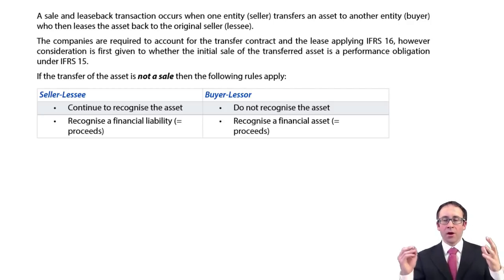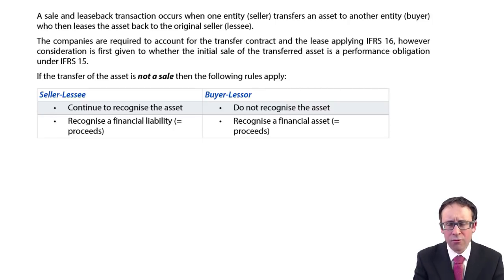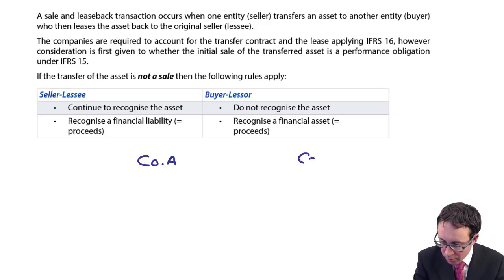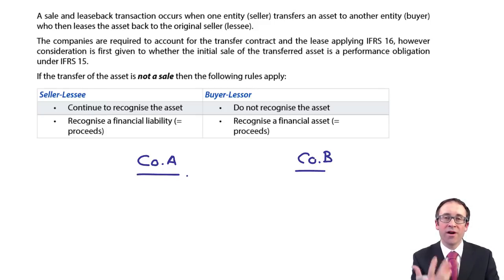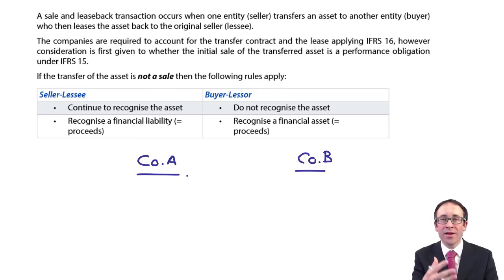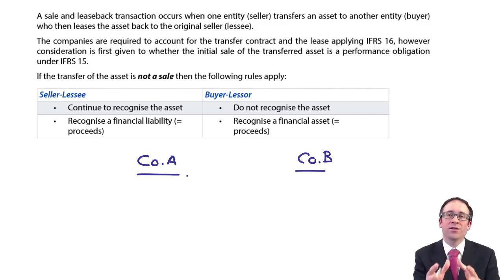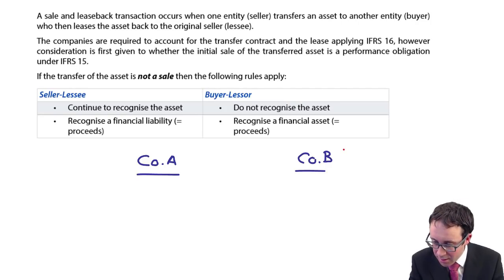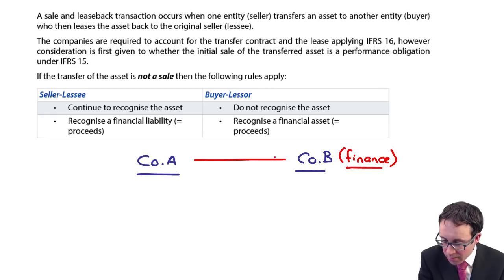You've got a scenario whereby you've got two companies — Company A and Company B. One of those companies wishes to raise some finance to be able to use in a new project. What it has is an asset that it owns that is currently quite valuable. So it would like to use that asset to try and secure the finance required for the new project. Say Company B is the business that needs the finance — it needs the money — then what it could do is sell the asset to Company A.